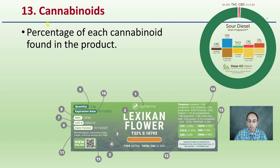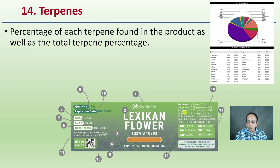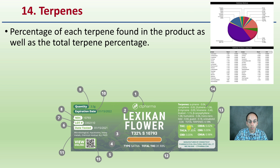Then we have number thirteen — the cannabinoid content, listed in the little box right here. This shows the percentage of each cannabinoid found in the product. Others may use color bars or bar graphs for comparison, but here they're just stated as percentages. Moving to number fourteen — the terpenes, located up here. Again, some labels go graphical, but here we just see the numbers: the percentage for each terpene found in the product, as well as the total terpene percentage for this particular flower.